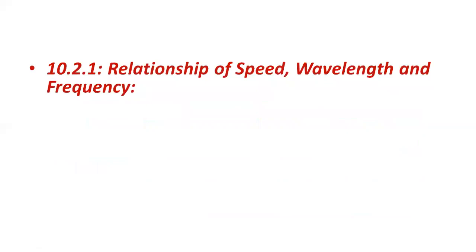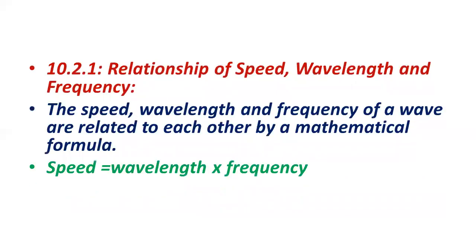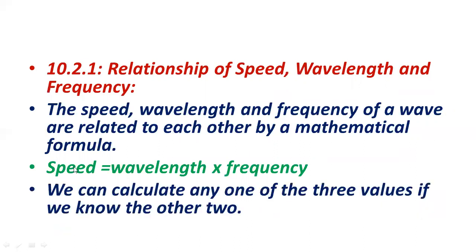The relationship between speed, wavelength, and frequency is expressed by a mathematical formula: Speed = Wavelength × Frequency. If you want to find speed, you need the values of wavelength and frequency. To find wavelength, you need speed and frequency. To find frequency, you need speed and wavelength. You can calculate any one of the three values if you know the other two.